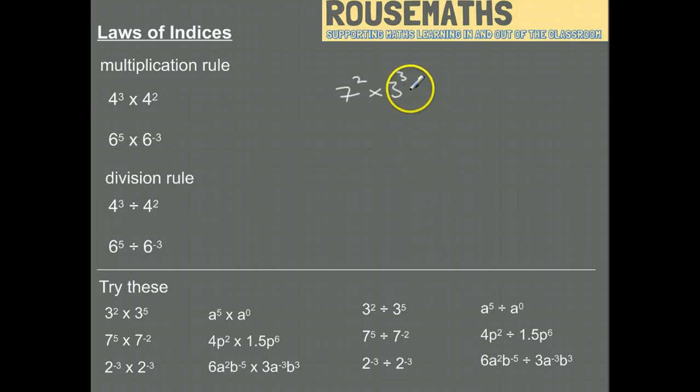If you have a situation where you're doing two different bases with indices, don't worry about that one because you just need to do 7 squared and 3 cubed and multiply the two numbers together. There's no way you can simplify that without just basically working it out.